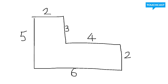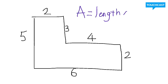Alright my friends, we are going to take a look at some irregular shapes. As you can see here, you can partition any of these shapes into two rectangles. I'm going to do the first one and then we are going to take a look at a few more examples. When we calculate the area of a rectangle, area equals length times width — just as a quick reminder.